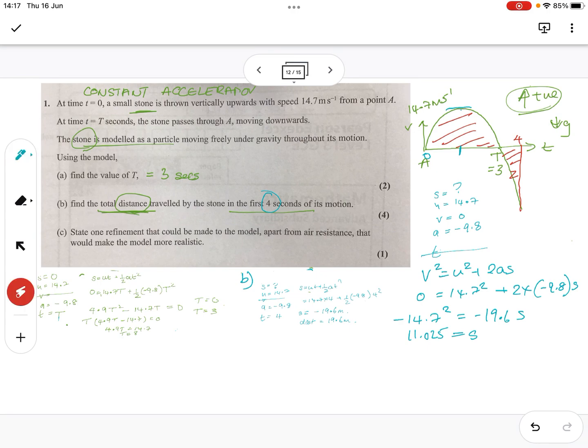So, that's the up, but it's got to come down. So, we need two lots of that distance. So, two lots of 11.025 plus this distance, 19.6, will give us the total distance traveled. 11.025 times 2 plus 19.6 gives me 41.65 meters. And because we did use gravity, we really only need two significant figures.